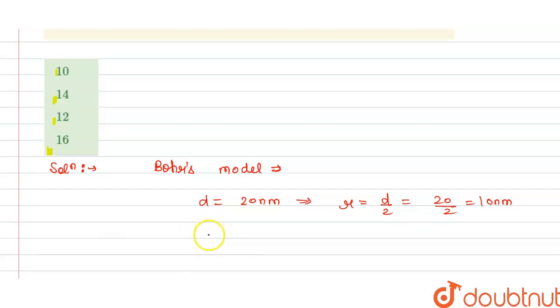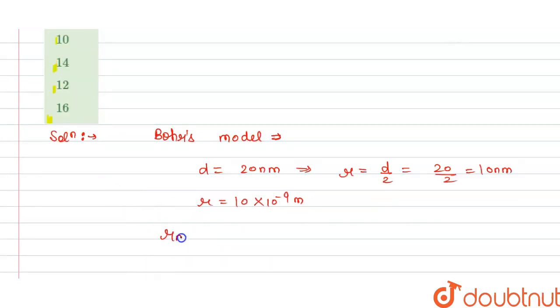So we have the radius is 10 multiplied by 10 power minus 9 meter, and we have the radius r_n of the nth orbit is 0.529 n squared divided by z angstrom.